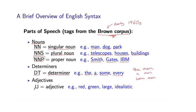And then finally we have adjectives. So JJ is used to refer to an adjective. An adjective could be a word like red, green, or large, or idealistic. And adjectives often come between determiners and nouns. So I can have strings like the red telescope would be one example where I have a determiner, then an adjective, then a noun.